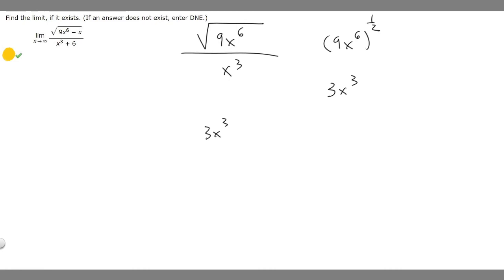We can rewrite it as 3x to the 3 over x to the 3. If you have it like this and you're trying to find a limit as x approaches infinity, they're the same up top.